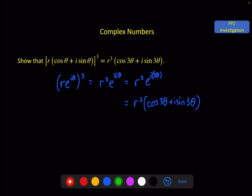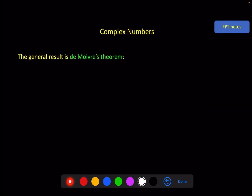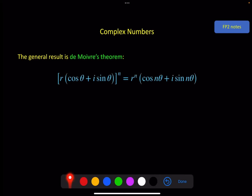We can keep going: R(cosθ + i sinθ) to the power of 4 equals R⁴(cos4θ + i sin4θ), and with a power of 5 it becomes R⁵(cos5θ + i sin5θ). This is De Moivre's theorem in its general form: a complex number in modulus-argument form raised to the power n — you put the power on the modulus and it becomes a multiplier in the argument. This result is really, really useful; it forms the basis of the rest of this video and the next two videos.